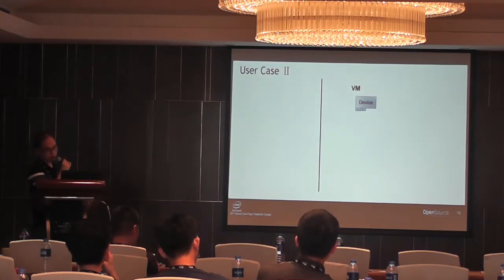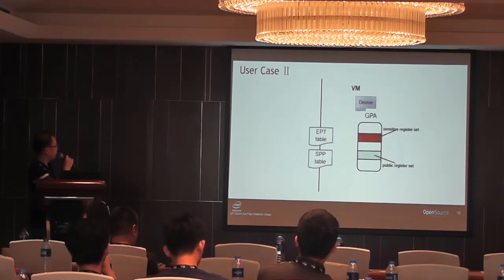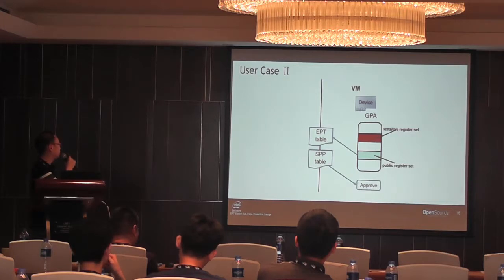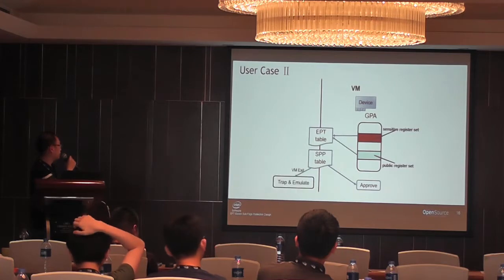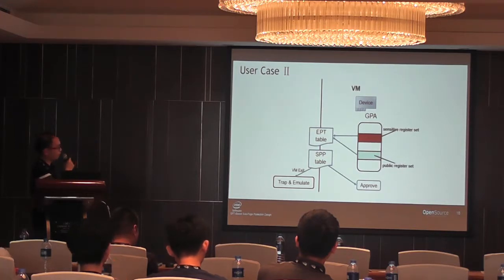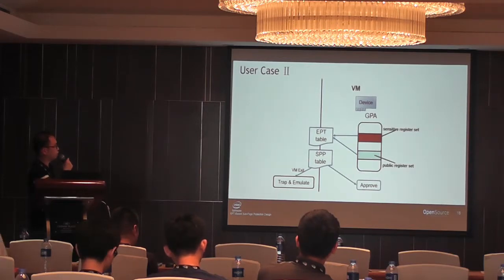For example, with a GPS device that has both system register sets and public register sets: when a write is made, the EPT and SPP tables are checked. If the access targets a public register set, it is approved. If it targets a sensitive register set, a VM-exit is triggered and the access is trapped and emulated by the hypervisor, which decides whether to emulate it or take some other action.